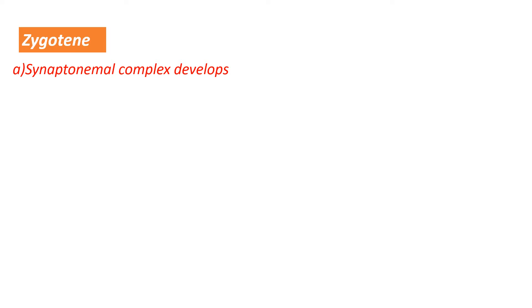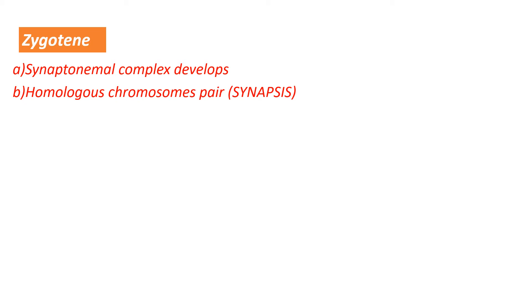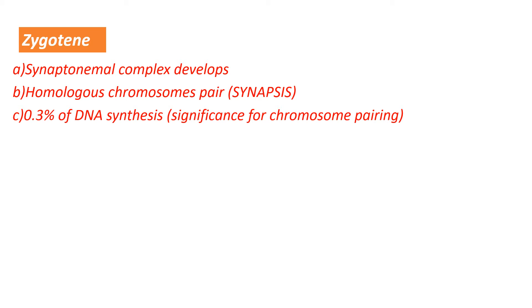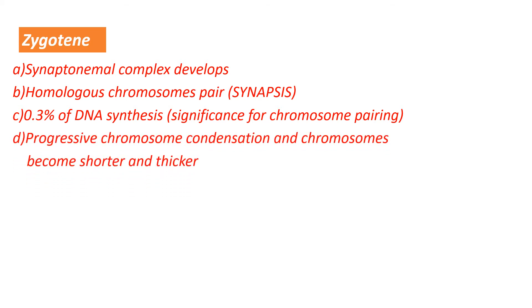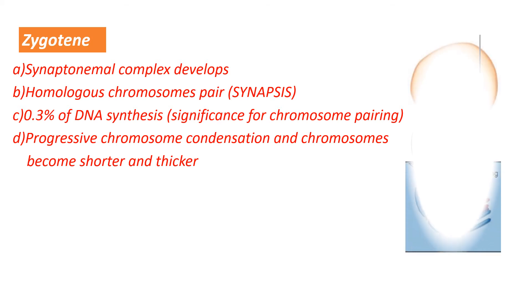The next sub-stage is zygotene. During zygotene, the synaptonemal complex forms when two homologous chromosomes come close at a distance of 1000 angstroms. The synaptonemal complex is composed of proteins; its main function is uncertain but believed to be essential for crossing over. Homologous chromosomes pair in a process called synapsis, seen only between homologous segments. Around 0.3% of DNA is synthesized during zygotene, important for chromosome pairing. There is progressive chromosome condensation, and chromosomes become shorter and thicker than in leptotene.